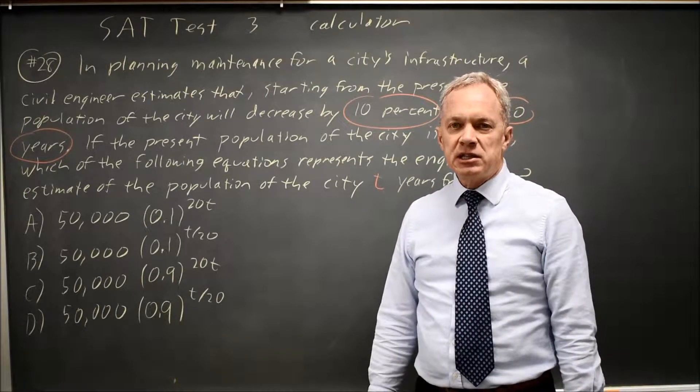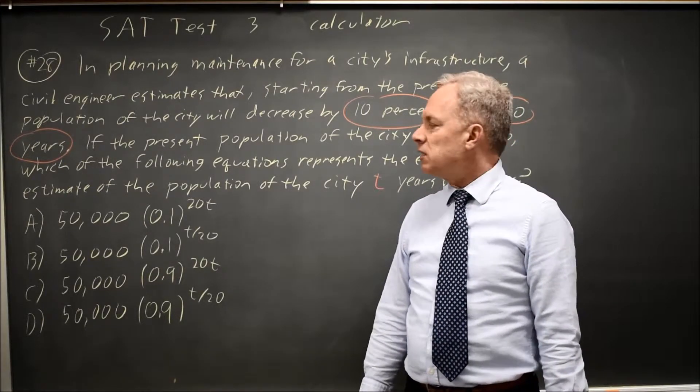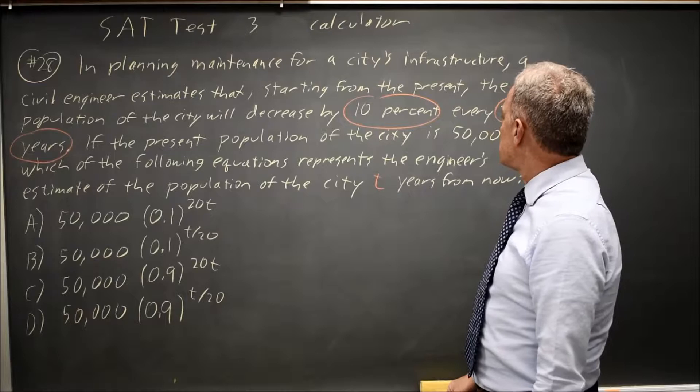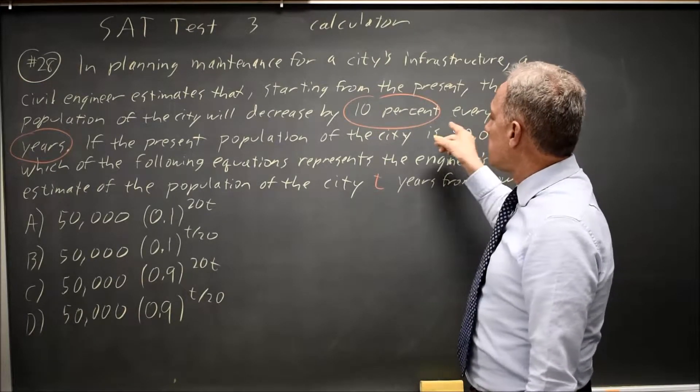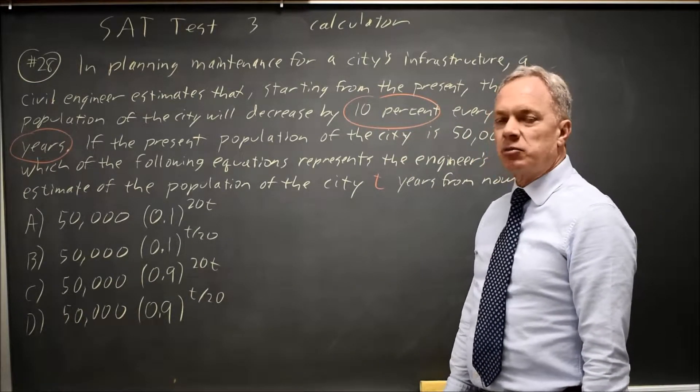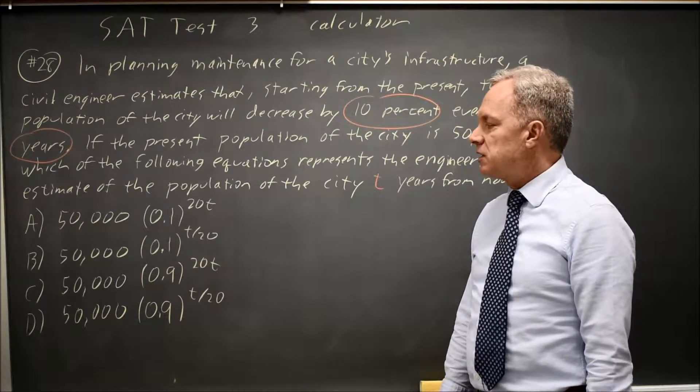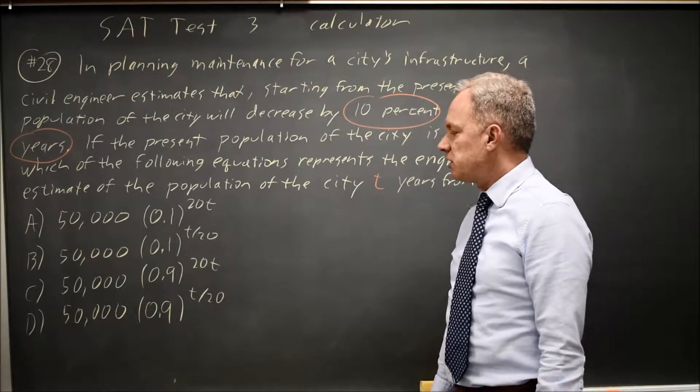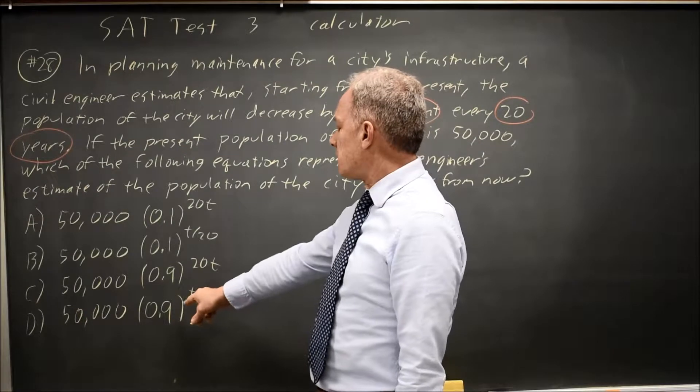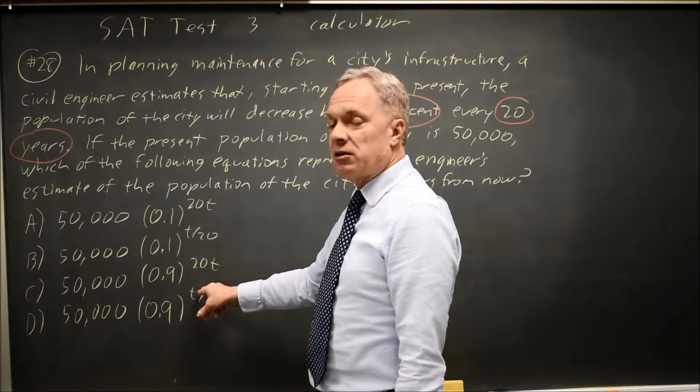You can reason this out with logic. In fact, that's a good way to do it. When t equals 20, you should have 10% less. You should have 90% of your current population. So that would be 0.9 to one of these powers.